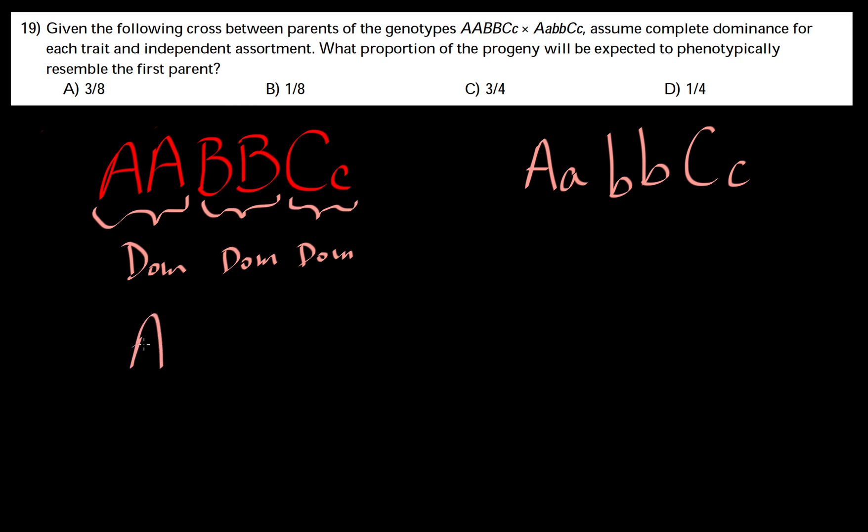The first parent is homozygous dominant A. When you cross that with the second parent, which is heterozygous, we get 100% phenotypically dominant.